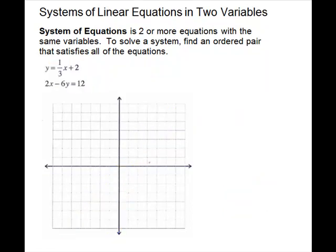We have one more system to solve by graphing. For the first equation, I'm going to graph it with slope because it is in slope-intercept form. My slope is 1 third — the coefficient of x — and my y-intercept is 2. First I plot the 2, then from there go up 1 and over 3. I'll move the slope one more time to make the line easier to draw — up 1, over 3 — then connect the dots to make the line.